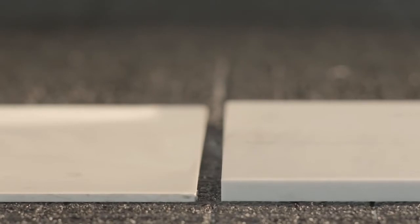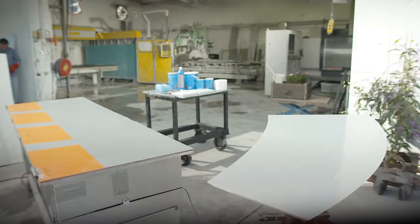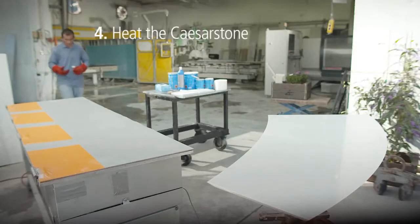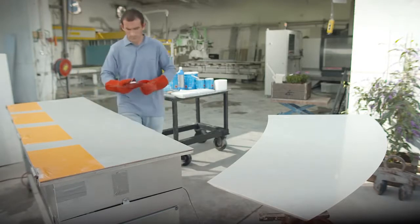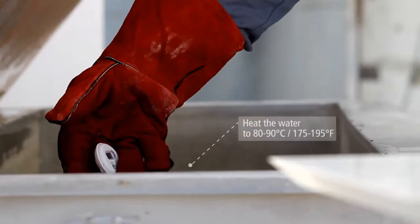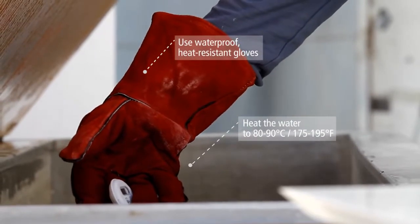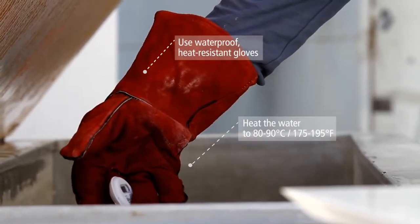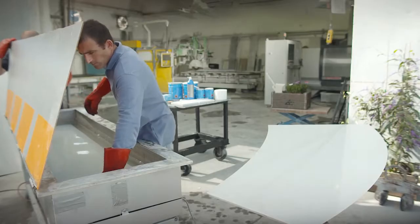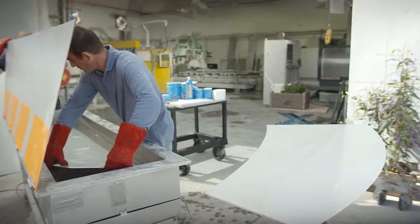Once you've reduced the Caesarstone to the thickness you need, move on to the next step, heating the material. Caesarstone quartz surfaces become flexible when they're heated. Continue with the heating process until the Caesarstone becomes flexible.